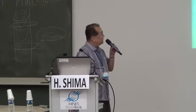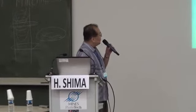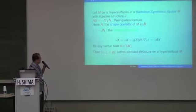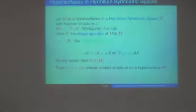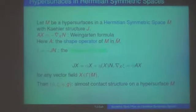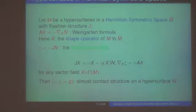I would like to explain the basic background for hypersurfaces in Hermitian symmetric space. Usually Hermitian symmetric space is equipped with a Kähler structure — it's a complex manifold with Kähler structure. When you consider a hypersurface in this Hermitian symmetric space, naturally we can see the Weingarten formula. Here I have denoted N — it means normal vector for the hypersurface in the Hermitian symmetric space.